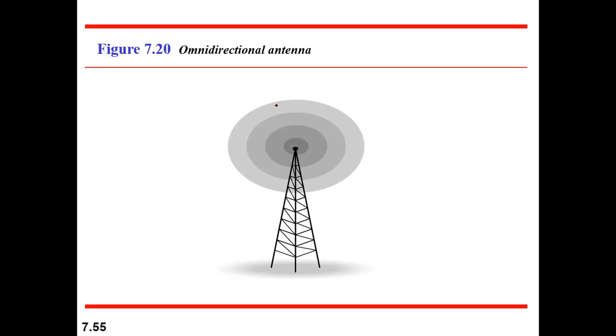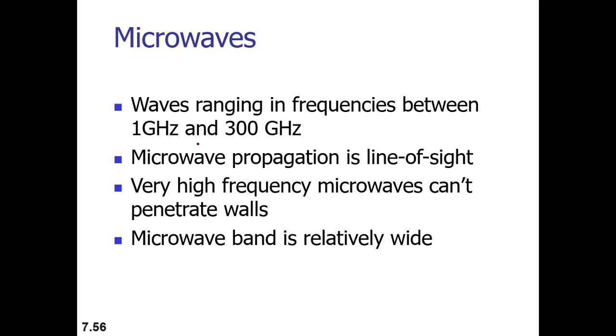Microwaves normally range from frequencies between 1 gigahertz to 300 gigahertz in the electromagnetic spectrum. Normally microwave propagation is line of sight, so the sending and the receiving antenna they have to be aligned. They have to be in each other's line of sight.